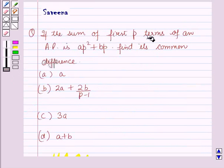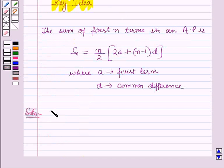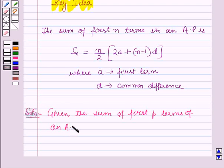Given the sum of first p terms of an AP is ap² plus bp.